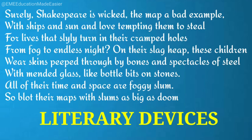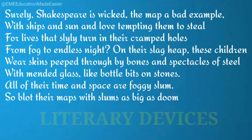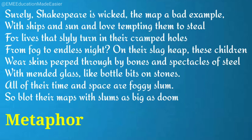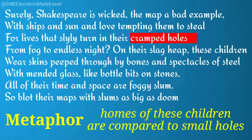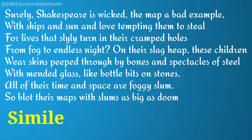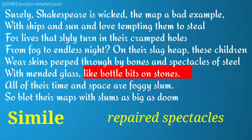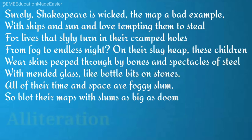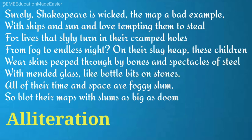Literary devices in stanza three include: metaphor — 'cramped holes' comparing homes to small holes; simile — 'like bottle bits on stone' describing repaired spectacles; and alliteration — 'from fog' where the F sound is repeated.